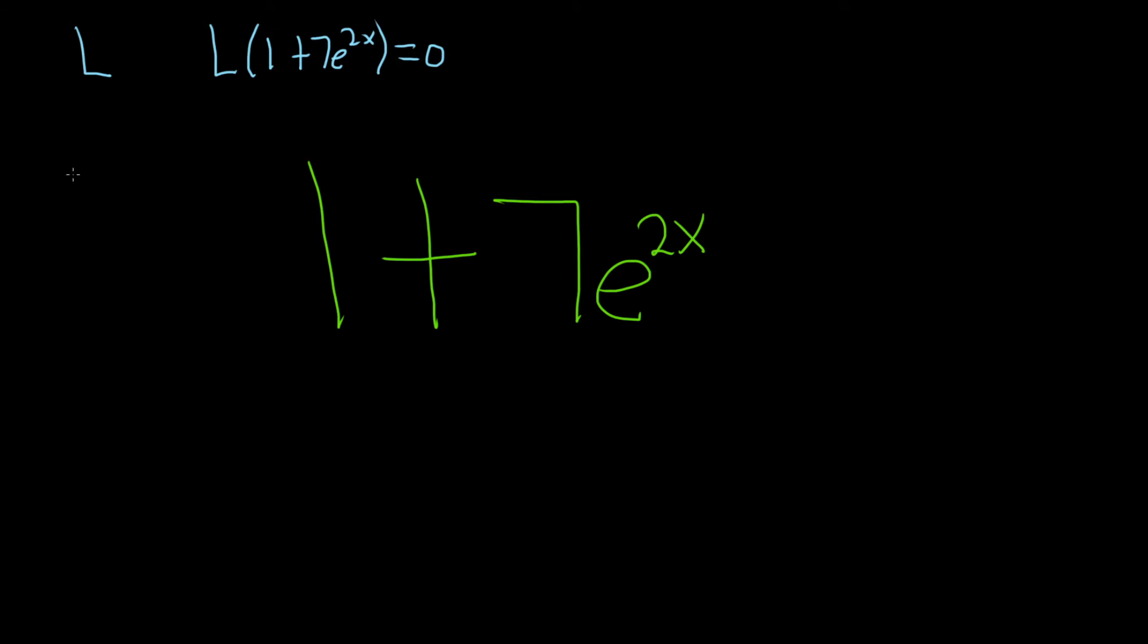So we're going to use the differential operator. Big D is the derivative operator. So basically that'll make the 1 go away because the derivative of 1 is 0. And then to get rid of e to the 2x, we can use D minus 2.